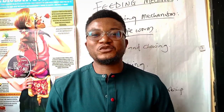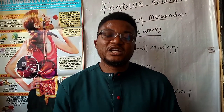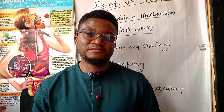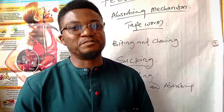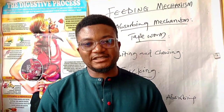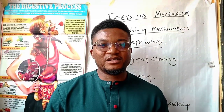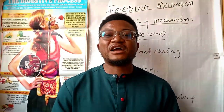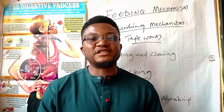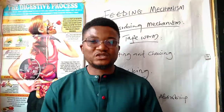We have been able to go through the various mechanisms of feeding. The feeding mechanism simply means the process or method through which any organism obtains and utilizes its food. We covered: the absorbing mechanism (e.g., the tapeworm endoparasite), the biting and chewing mechanism (e.g., the cockroach), the sucking mechanism (e.g., the mosquito), the grinding mechanism found in man, goats, and other higher vertebrates, and the trapping and absorbing mechanism. Do refer to the notes and attend the evaluation questions. Thank you and let's continue learning.